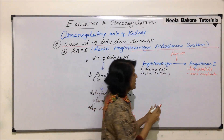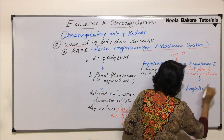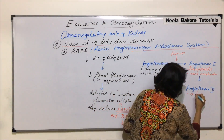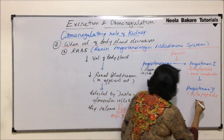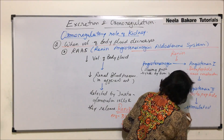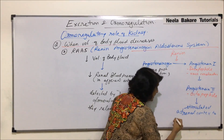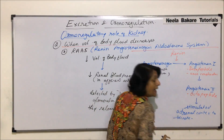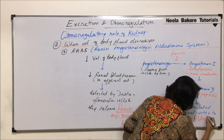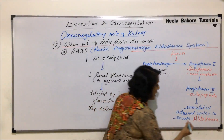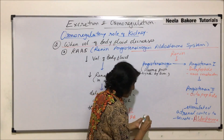Angiotensin 1 is then converted into angiotensin 2, which is an octapeptide. Angiotensin 2 stimulates the adrenal cortex to secrete aldosterone. This aldosterone, which is produced by the adrenal cortex, is responsible for increased absorption of ions.